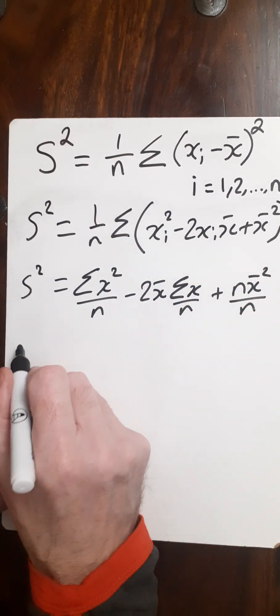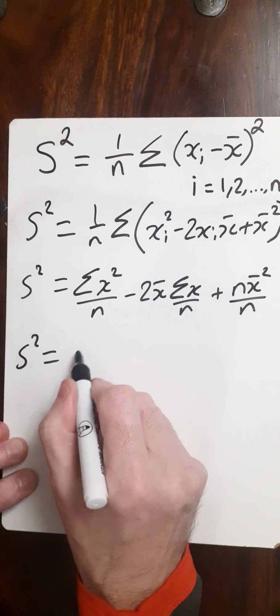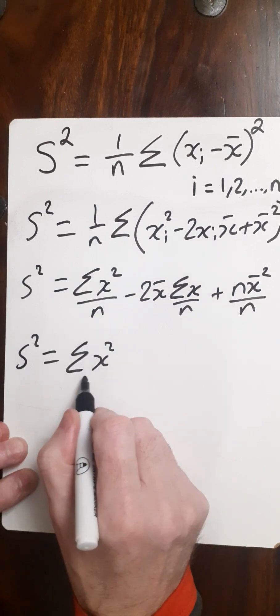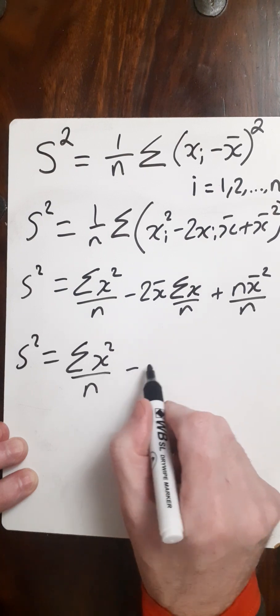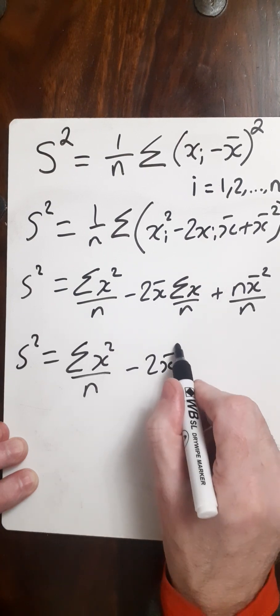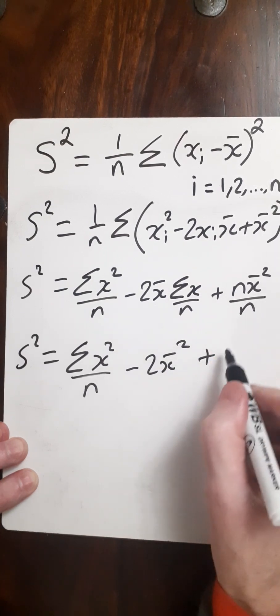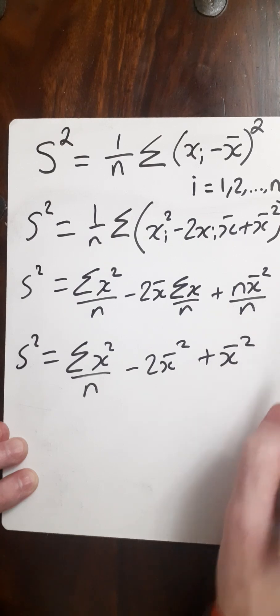Now I can simplify. My variance is the sum of all the xi squareds over n. This here is just the mean, so I've got 2x bar squared. Here the n's cancel, and that's just x bar squared.